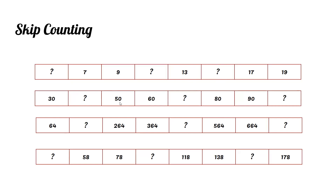The two continuous numbers here are 50 and 60. Sixty minus fifty is ten. So thirty plus ten equals forty, sixty plus ten equals seventy, ninety plus ten equals one hundred.